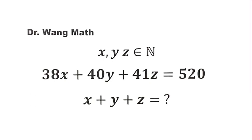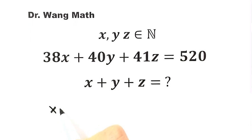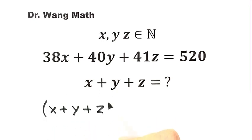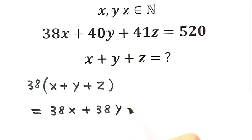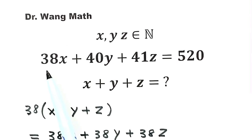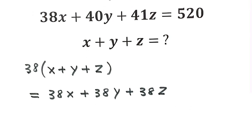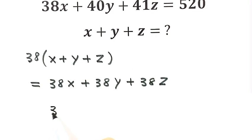How do we solve this question? We're going to start by taking x plus y plus z and multiplying the whole quantity by 38. Let's expand the product: 38x plus 38y plus 38z. Why 38? Because the first coefficient in the equation is 38 — then 40, then 41. So for the first term, just write down 38x.